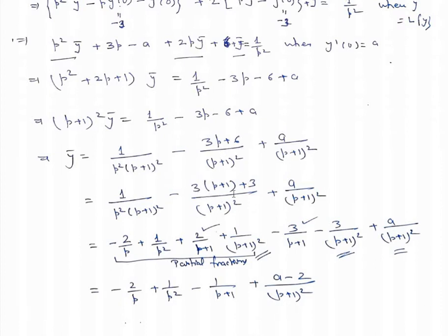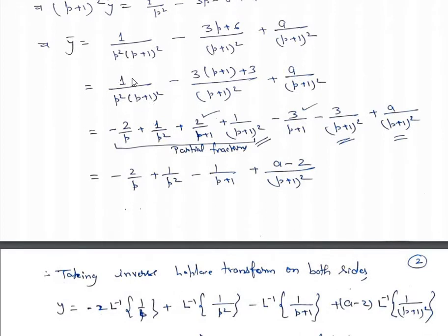This term can be written as -3(p+1) + 3 all over (p+1)². Now break this into partial fractions. We have -2/p + 1/p² + 2/(p+1) + 1/(p+1)². This term becomes -3/(p+1) - 3/(p+1)² plus a/(p+1)². Combining like terms: -2/p + 1/p² - 1/(p+1) + (a-2)/(p+1)².